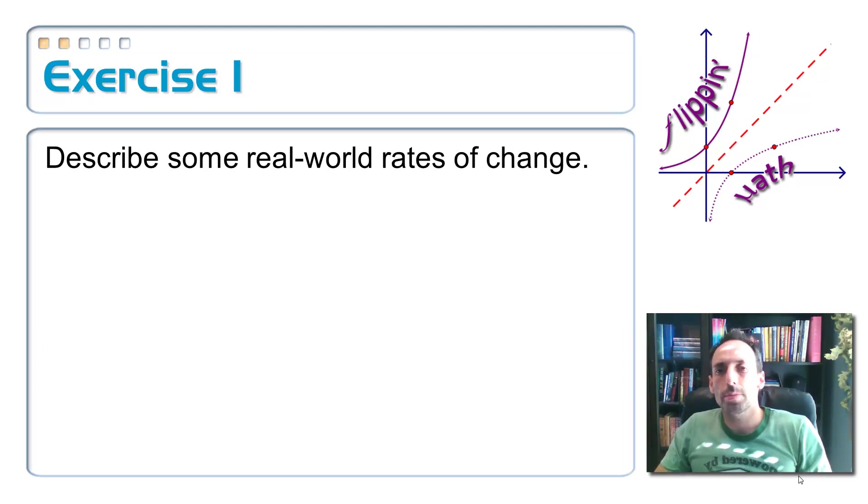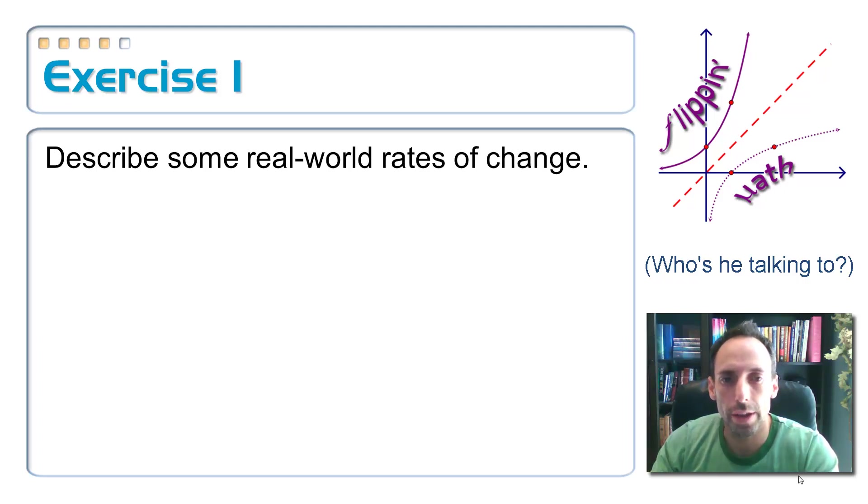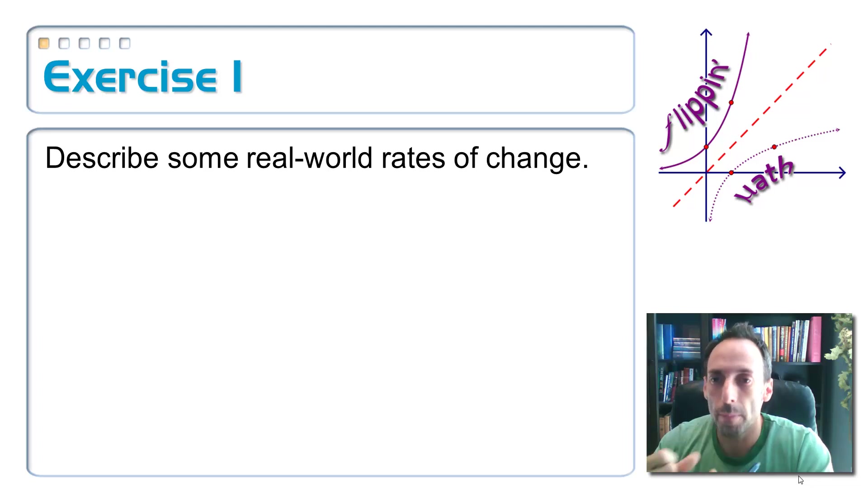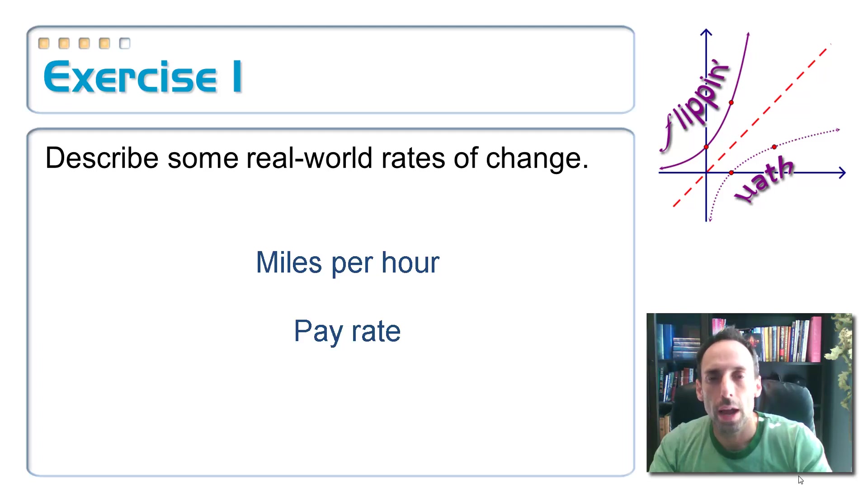So, on exercise one, describe some real world rates of change. So, something practical would be, well, here, you think about it for a second. I'm going to listen to you. Yeah, that sounds about right. Yeah, that one's pretty good. All right. So, if you can't hear this, if you can't hear that where you're at on your computer, somebody just said, how about whenever you're driving, how fast you're going? Miles per hour. That's a rate of change. And somebody else said, if you're working on a job and you get a pay rate, that's a rate of change. How much money you are making per hour. Very good.